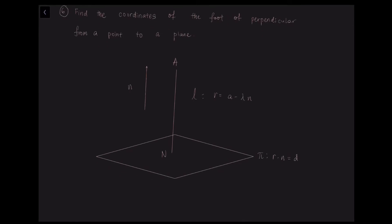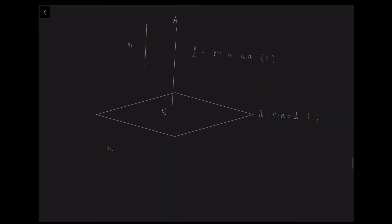How do we find the coordinates of the foot of the perpendicular from a point to a plane? Imagine modeling a person standing upright on a horizontal plane π as a uniform rod AN, as shown in the diagram. The foot of the perpendicular from the point A to the plane π is where the person's feet are — this is the point N. Thus, locating the position vector of the foot of the perpendicular from A to plane π is a special case of finding the position vector of the point of intersection between a line and a plane.